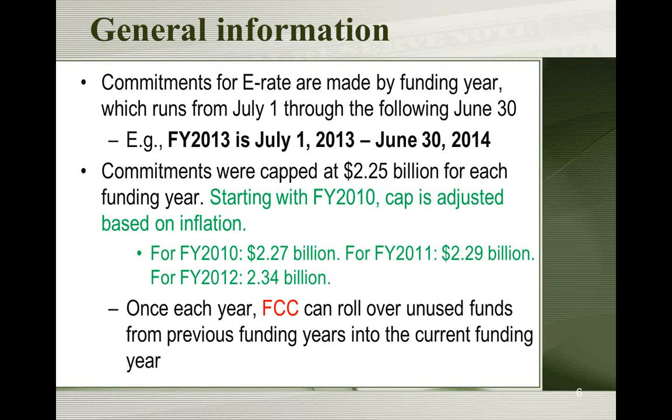The E-Rate funding year runs every year from July 1st through June 30th. When you're applying for E-Rate, you're thinking ahead — right now you're planning to start receiving a discount on your bills starting next summer. Working on your forms now, you're thinking about July 1st, 2013 through June 30th, 2014. Because funding years overlap, you'll notice that you may still be working on last year's application at the same time. You just have to keep those things separate.